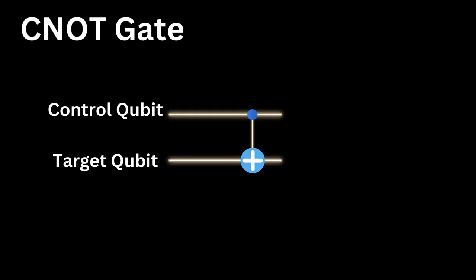In classical computing, we have the NOT gate, which flips a bit from 0 to 1, or vice versa. But quantum computing is a different game.